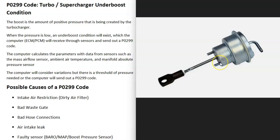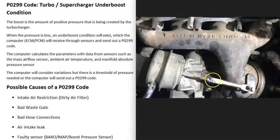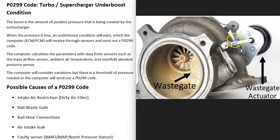There's a component called a wastegate actuator which basically just pushes in and out on that gate to open and shut it. This is a common cause of the P0299 code — it's a simple device that pushes on a lever to open the wastegate, but it's very common for those to go bad and need to be replaced.